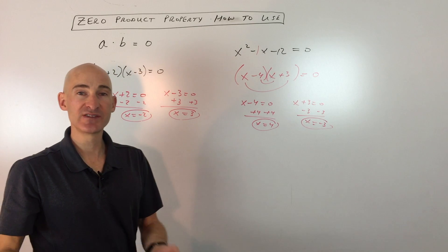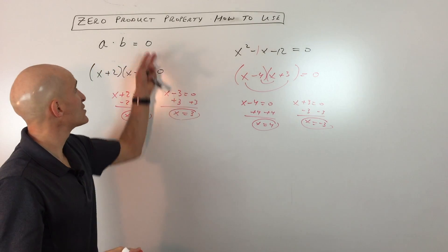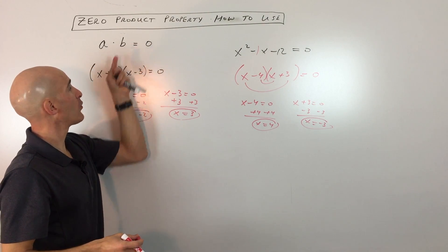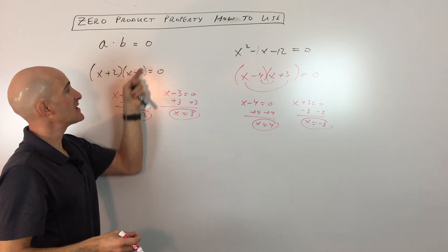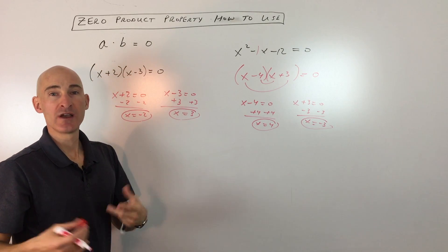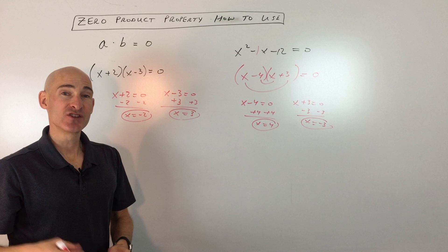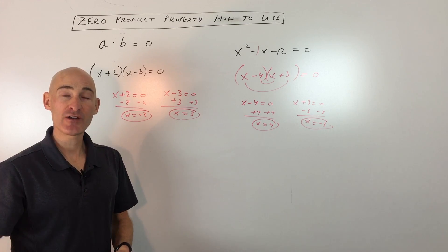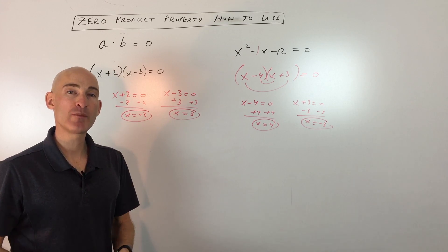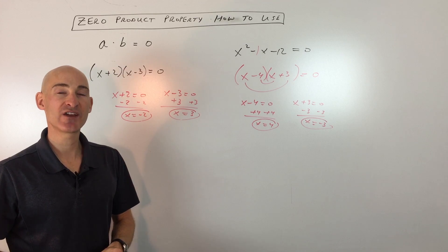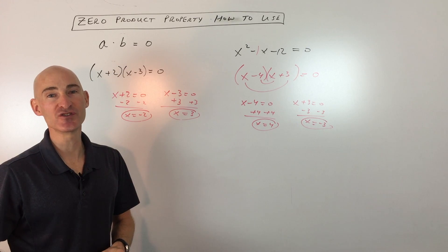So again, the zero product property is very easy. It sounds a little mysterious, but all you're doing is factoring, or if it's already factored, setting each group equal to zero, and then you can solve your equation. I hope this helped you understand how to work with it better. Subscribe to the channel, check out more math videos on Mario's Math Tutoring YouTube channel, and I look forward to helping you in future videos.